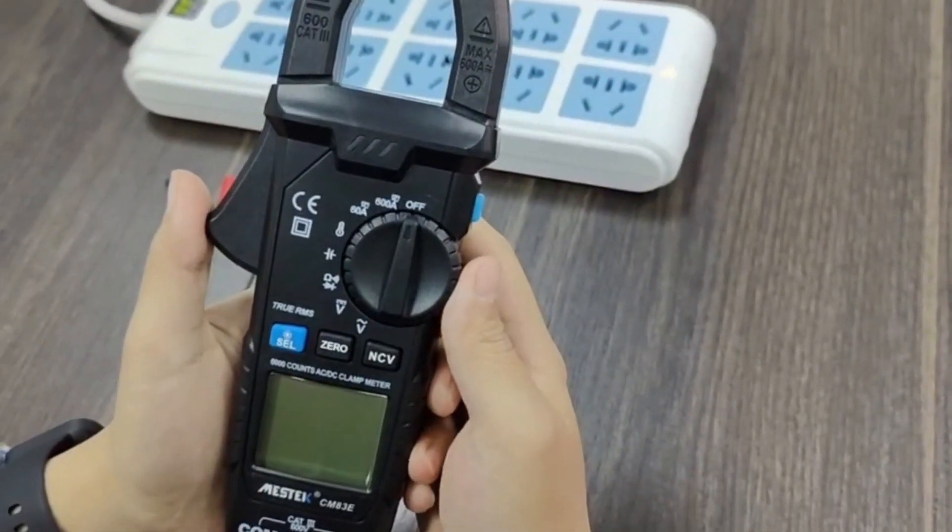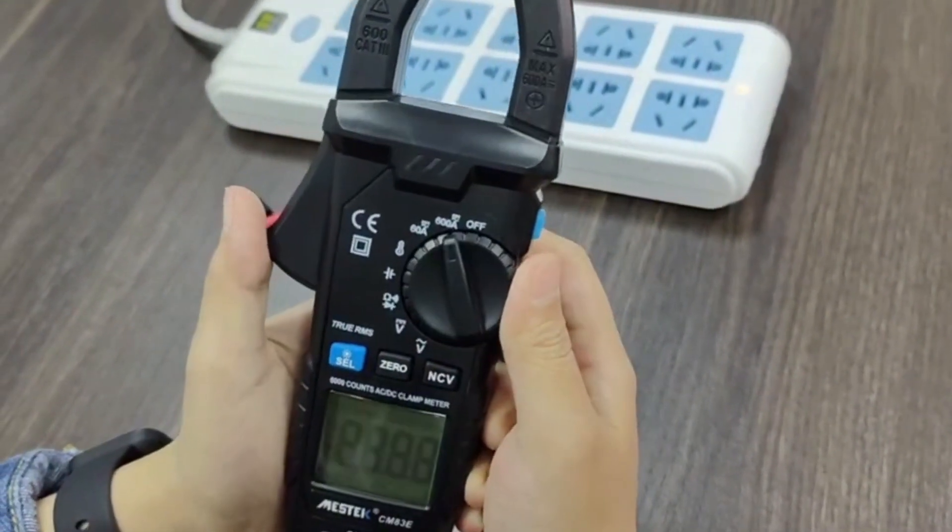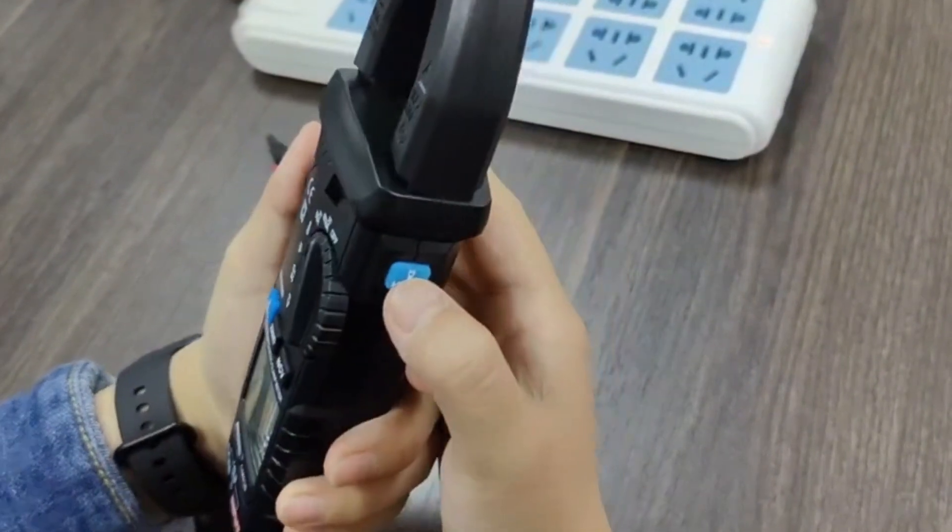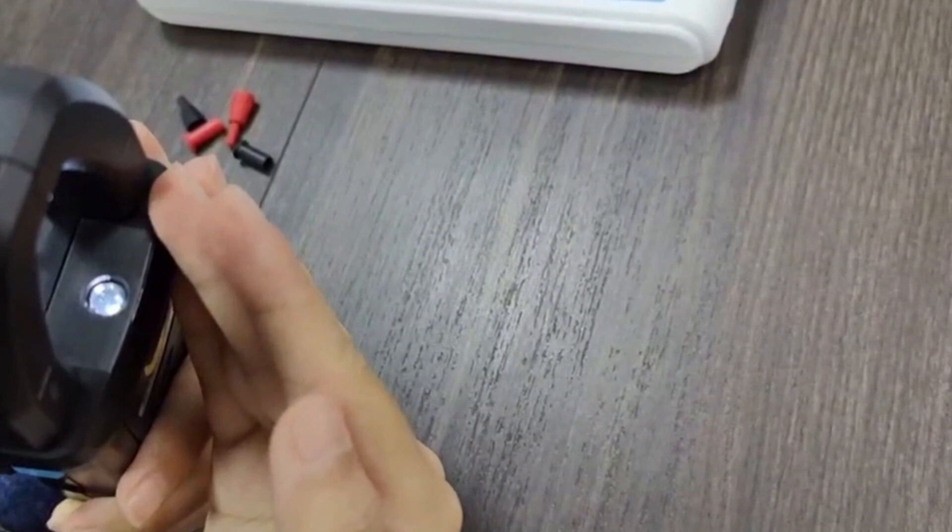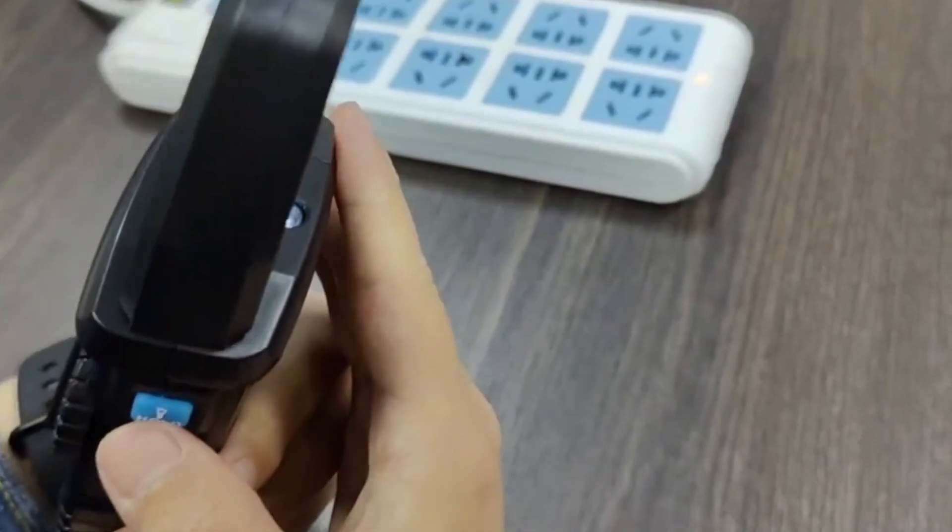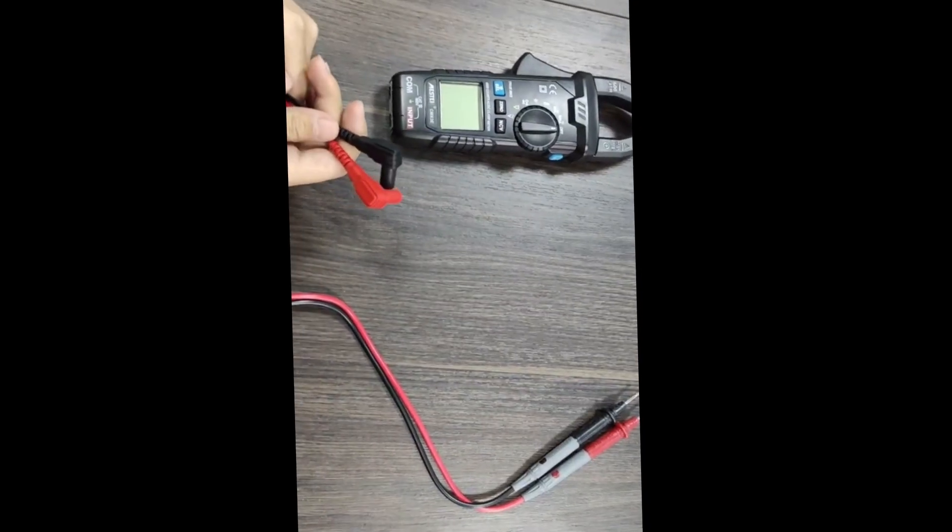Next, the flashlight function. First, power on the device. Then long press the flashlight button to activate it. Long press again to power off.